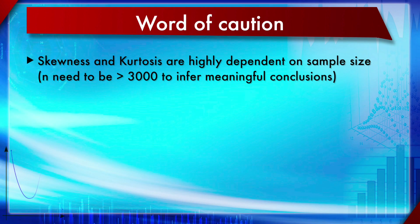An important word of caution: skewness and kurtosis are highly dependent on sample size. The sample size n needs to be more than 3,000 to infer meaningful conclusions. If your sample size is less than 3,000, neither skewness nor kurtosis conveys any meaningful information.